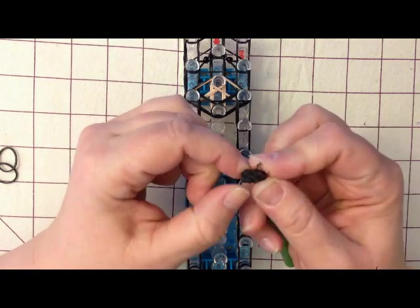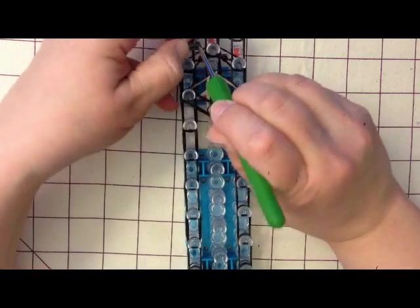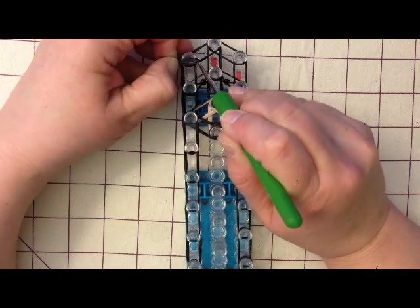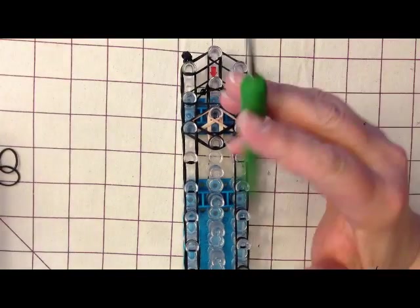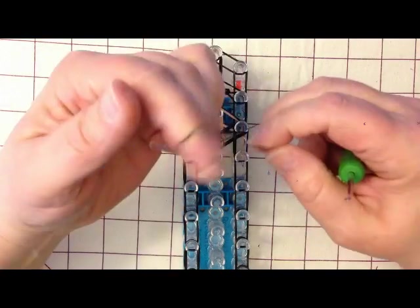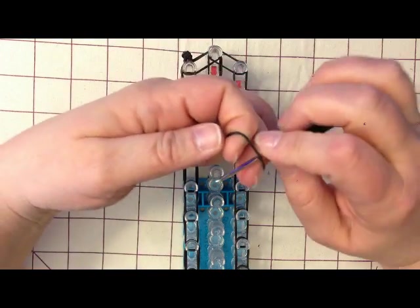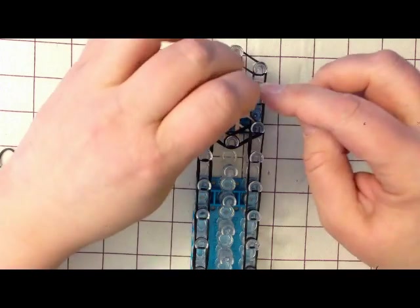And we are going to attach that to our loom right here, pointing upwards. Going to do the same on the other side. Stretch it out, figure eight, hook through once and twice.